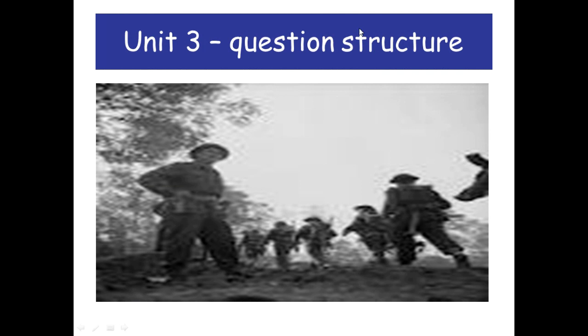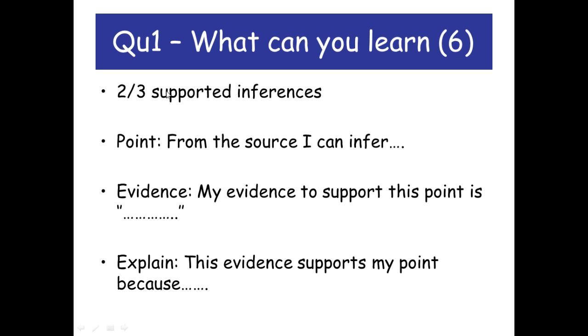This is just going to go over the question structure for Unit 3 in GCSE Excel History. Unit 3 will be your written paper, the British Society paper, and there are going to be five questions.